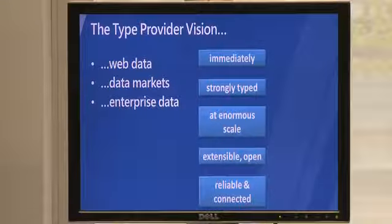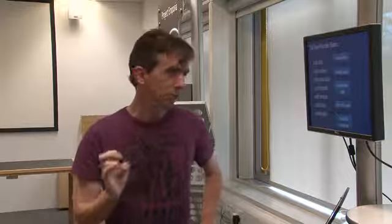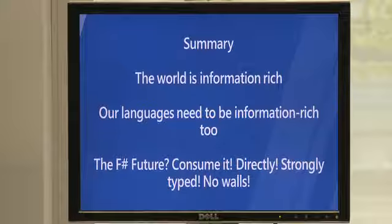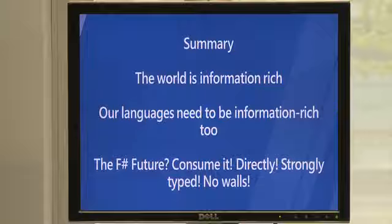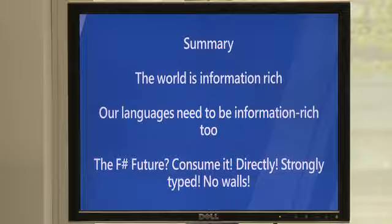The vision we have is that if you have web data, data markets, or enterprise data, you get immediate strong typing at enormous scale in an extensible, open, reliable, and connected way. There are all sorts of other information spaces we're interested in interoperating with, from spreadsheets to web services to social data to design-based data. In summary, the world is information rich and our languages need to be information rich too. Our manifesto for the work we're doing here at Microsoft Research in Cambridge, together with the Visual Studio F-Sharp team, is to consume it directly — strongly typed, without walls between you and your information. Thank you very much.